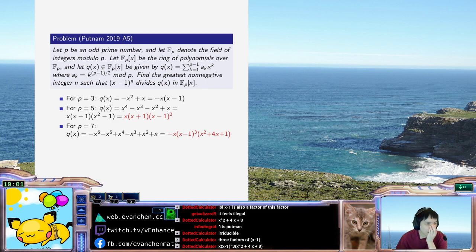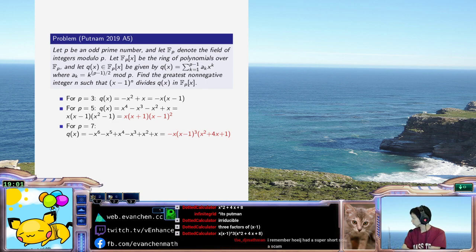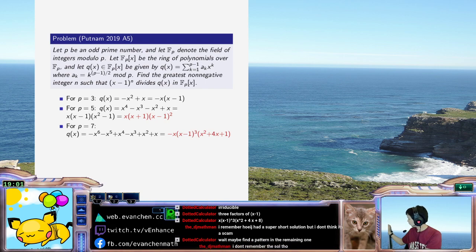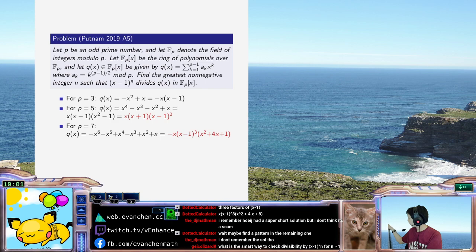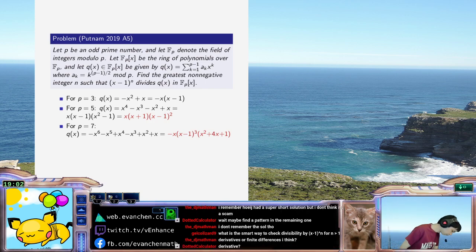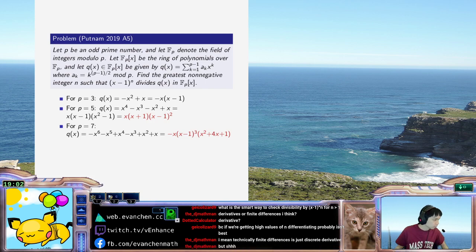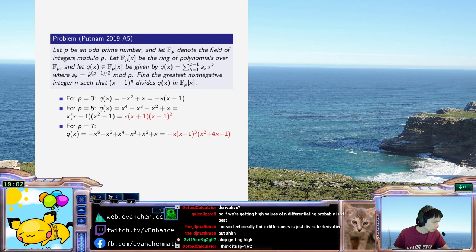I'm just so confused that this is happening. Like, what is going on? Are we being scammed again? I don't remember. Yeah, p-1 halves would definitely, I think, be a very reasonable guess.